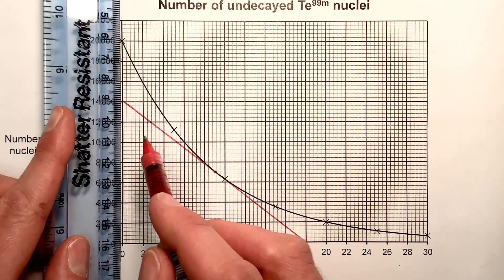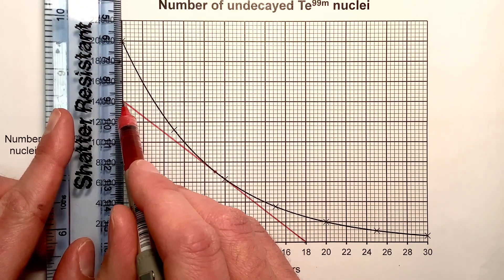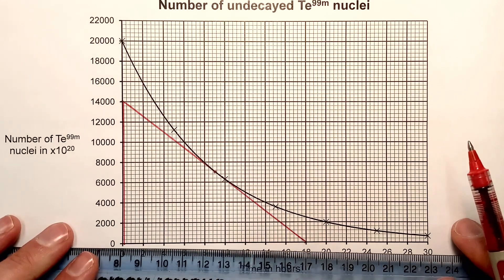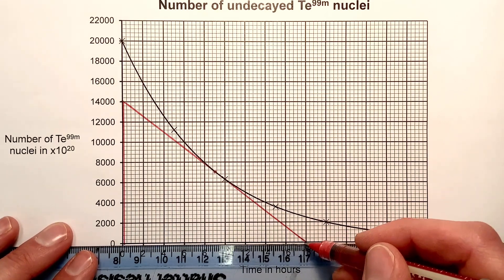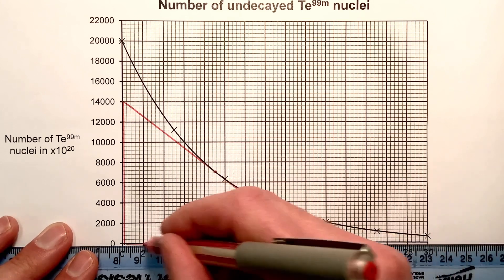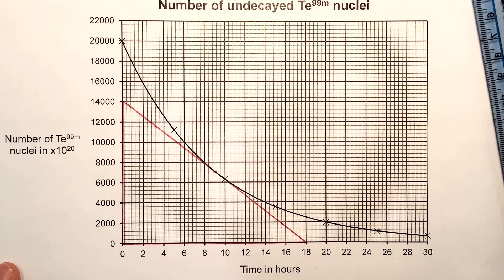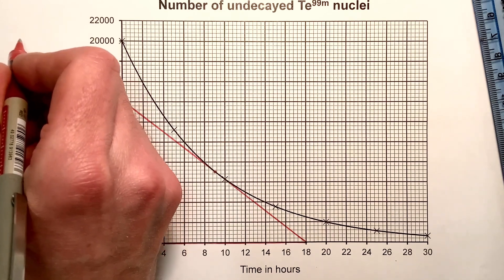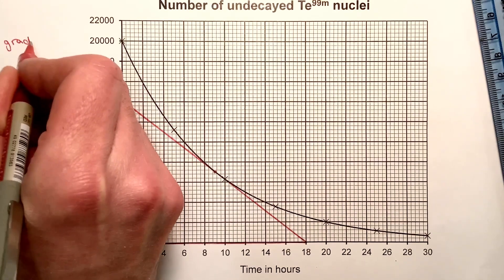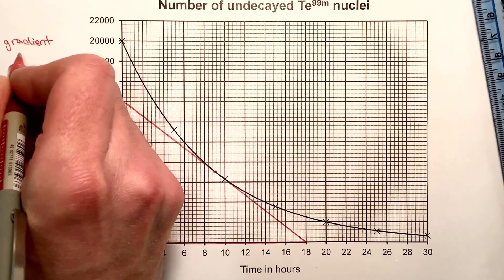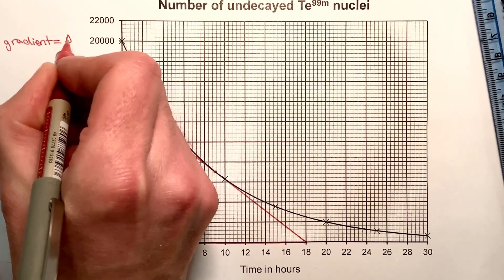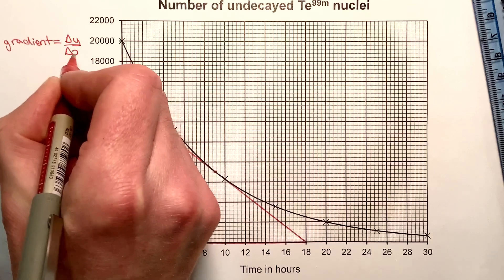We now need to change this into a triangle. I'm drawing the triangle as big as possible, as that will give me the most accurate gradient. For gradient, the gradient is the change in the vertical divided by the change in the horizontal.